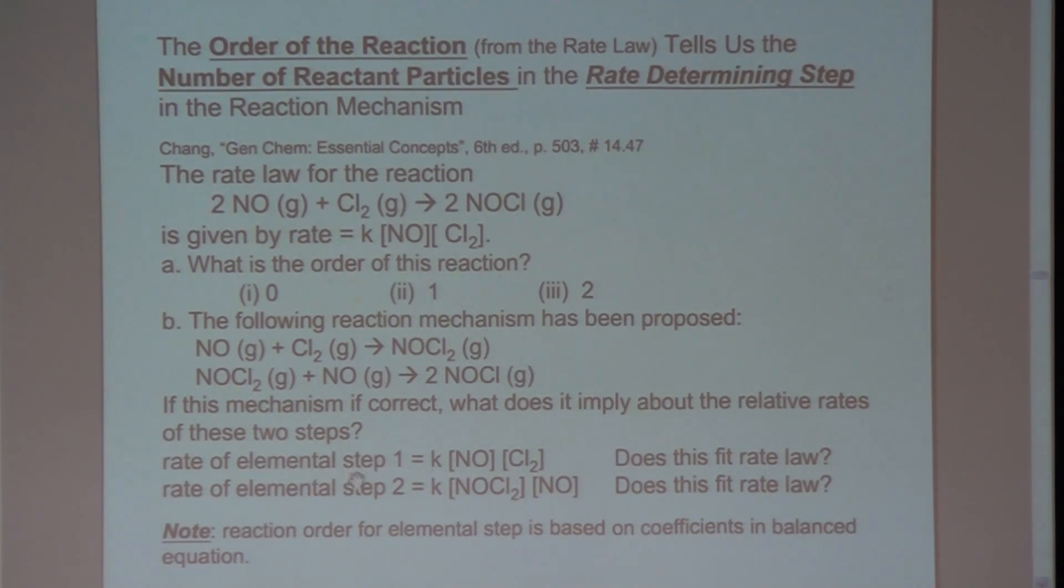So for step one, the rate law equals K times NO to the first power times Cl2 to the first power. Now, for an elemental step, the order of the reaction with respect to each reactant is based on the coefficients and the balanced chemical equation. So again, when you're looking at an overall reaction, you have to do an experiment to figure out the order. If you're looking at a reaction mechanism, elemental step, the order is based on the coefficients and the balanced chemical equation. So in this case here, note that for step one, it's first order in NO and first order in Cl2.